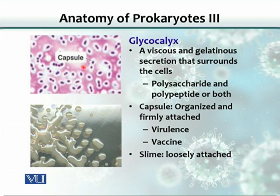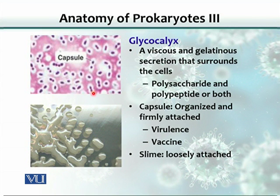This is a negative-stained slide showing some bacteria. The blue or black cells depict the organisms, and there is a clear halo around each cell — this halo is basically the capsule. A capsule can be visualized by negative staining, one of the techniques mentioned earlier.